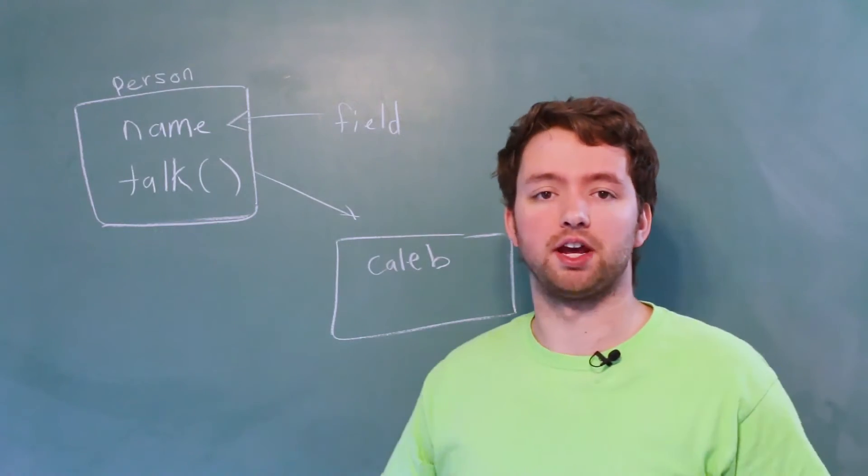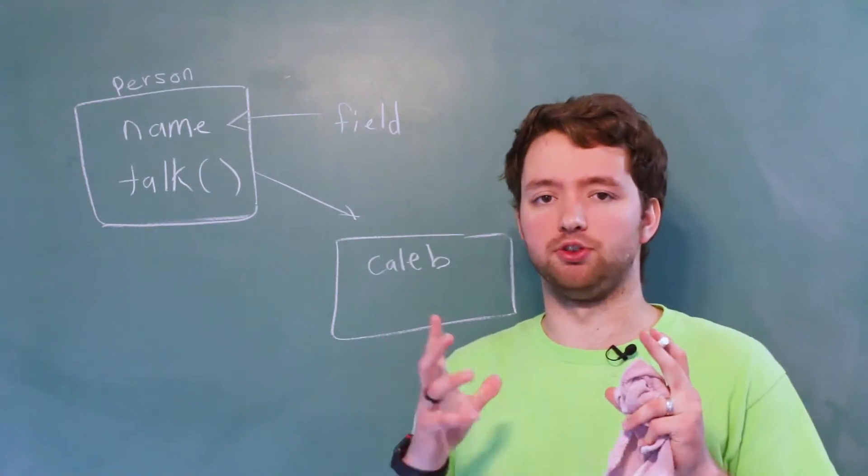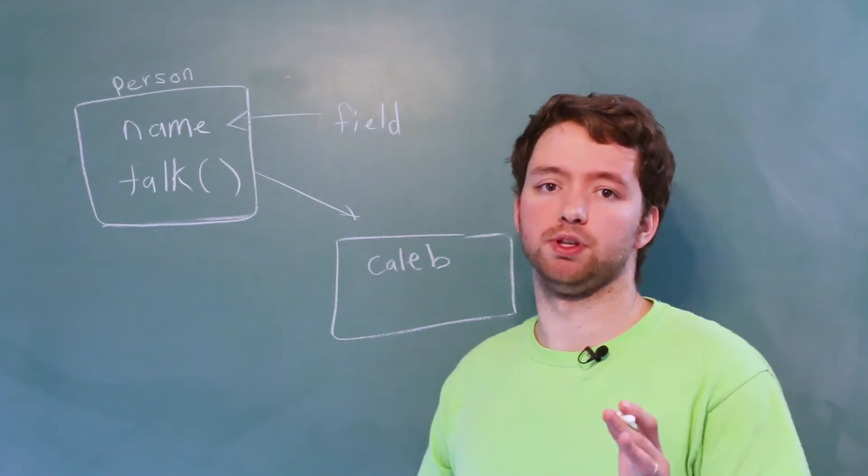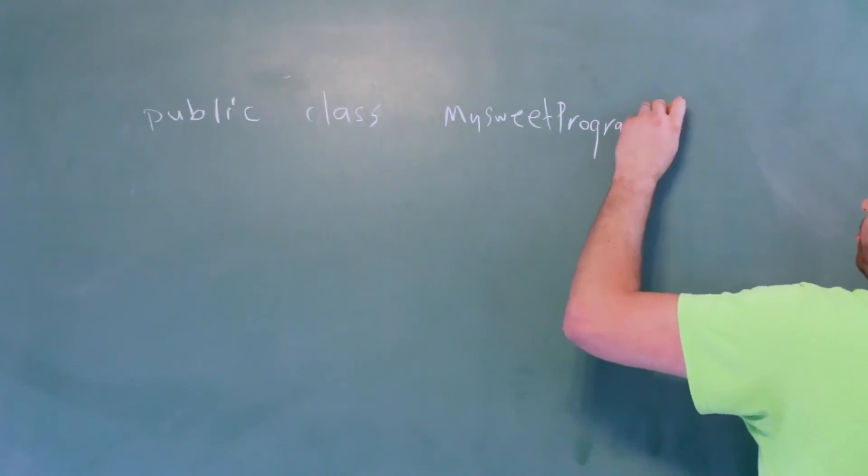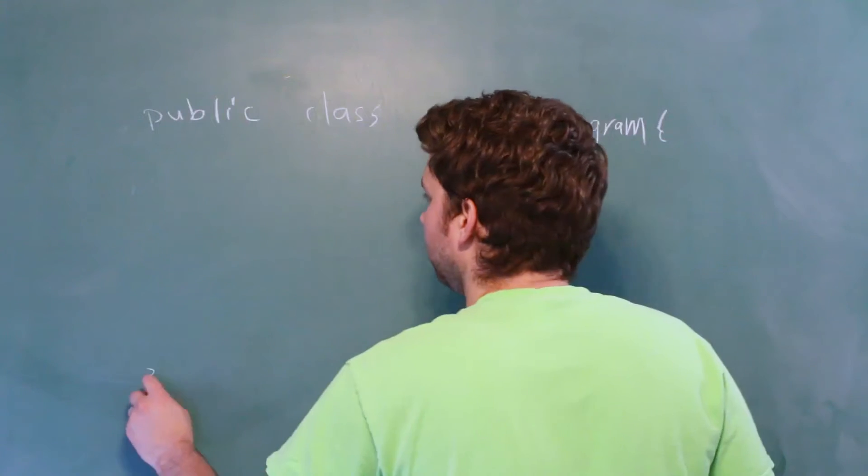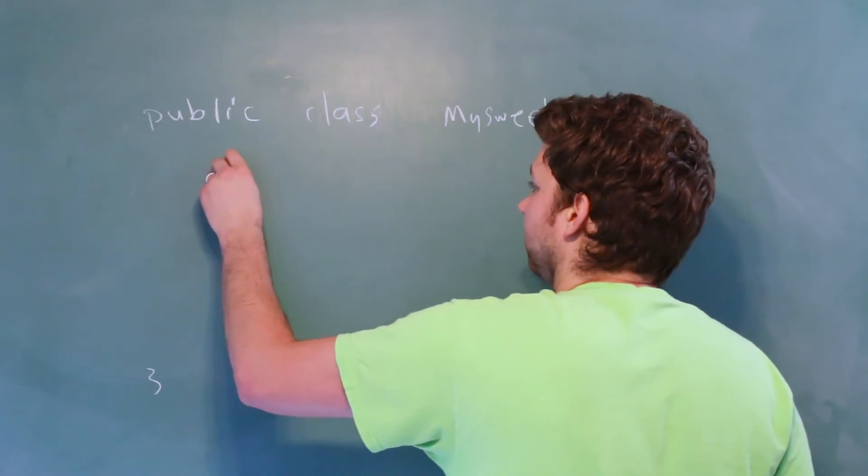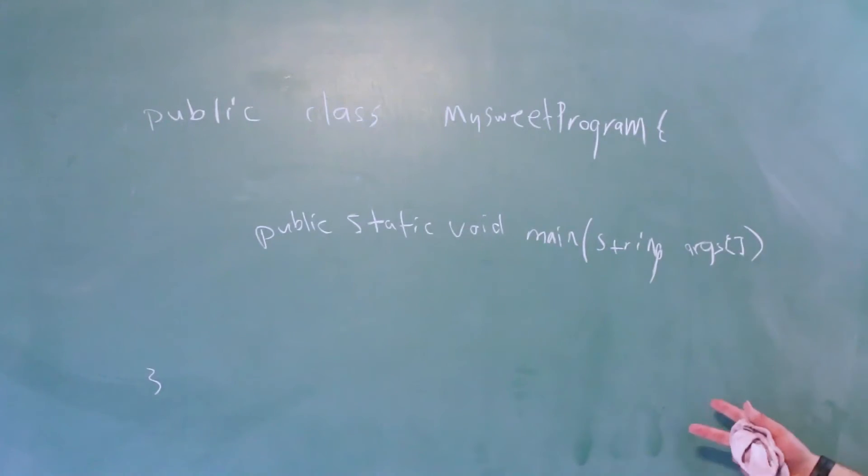So to put this into context, when we open up a Java application, it might look something like this. You might have some class called my sweet program, and inside of here you're going to have a main method. So it's gonna look something like that.